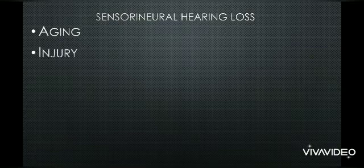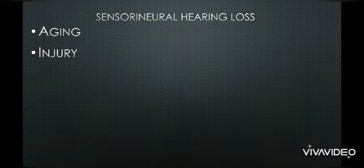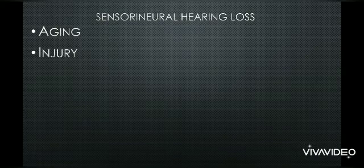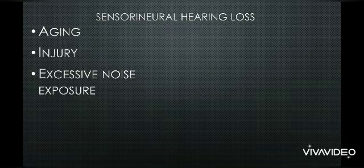The next cause is injury. If there is any kind of permanent injury to the inner ear, the auditory nerve, or the brain, it can harm the auditory system and cause sensorineural hearing loss. The next cause is excessive noise exposure — if large-intensity sound strikes the eardrums and auditory nerve, it can cause permanent damage to the inner ear.